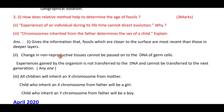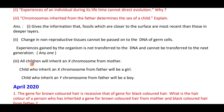Change in the non-reproductive tissues cannot be passed on to the DNA of germ cells. The experience gained by an organism is not transferred to the DNA, hence it cannot be transferred to the next generation. Chromosomes inherited from the father determine the sex of the child — if the baby inherits X chromosome from the father it will be a girl, if it is Y it will be a boy. Hence, the father decides the sex of the child.